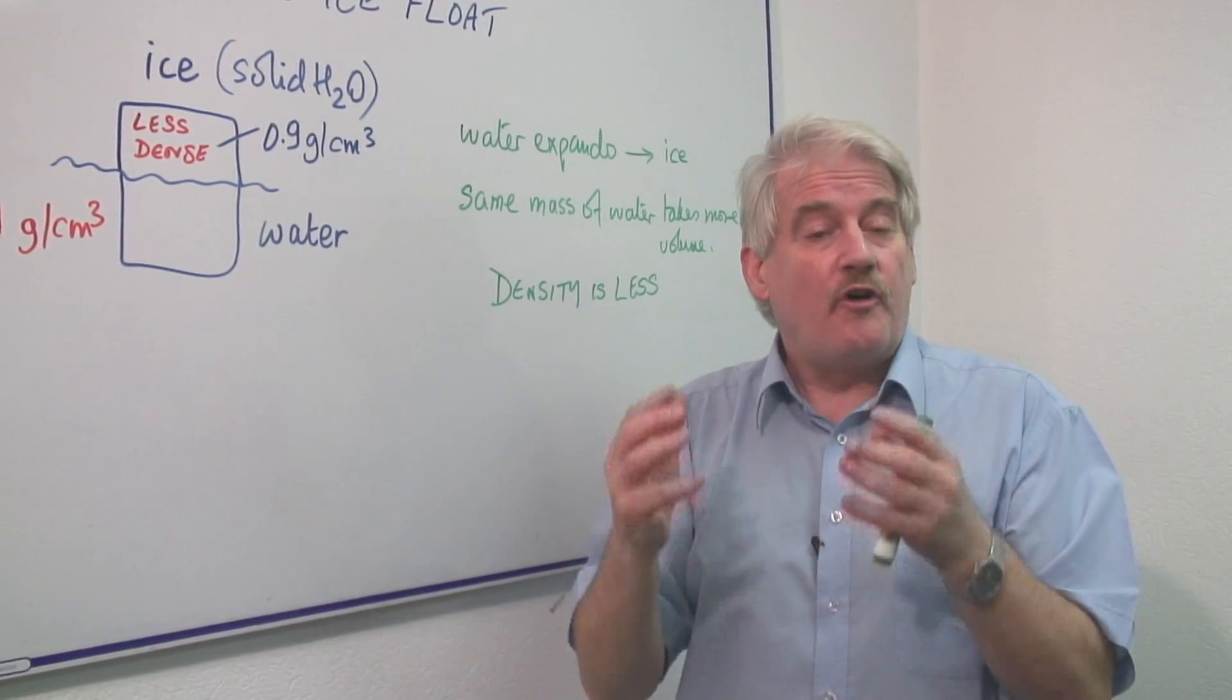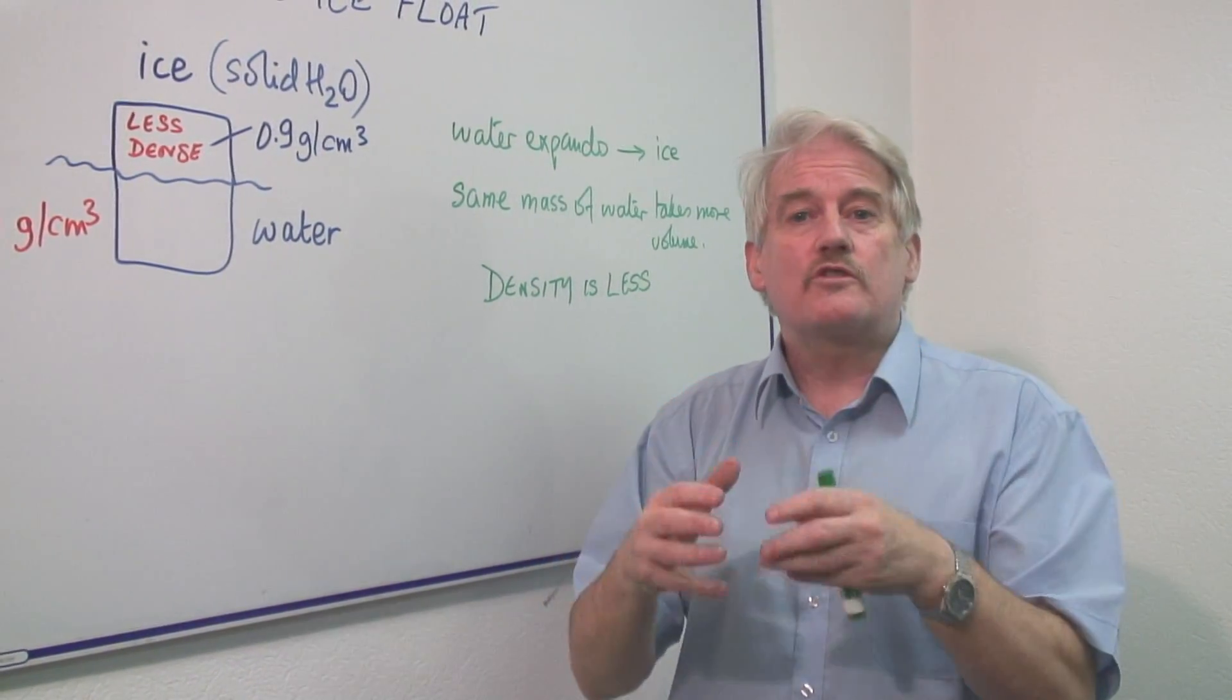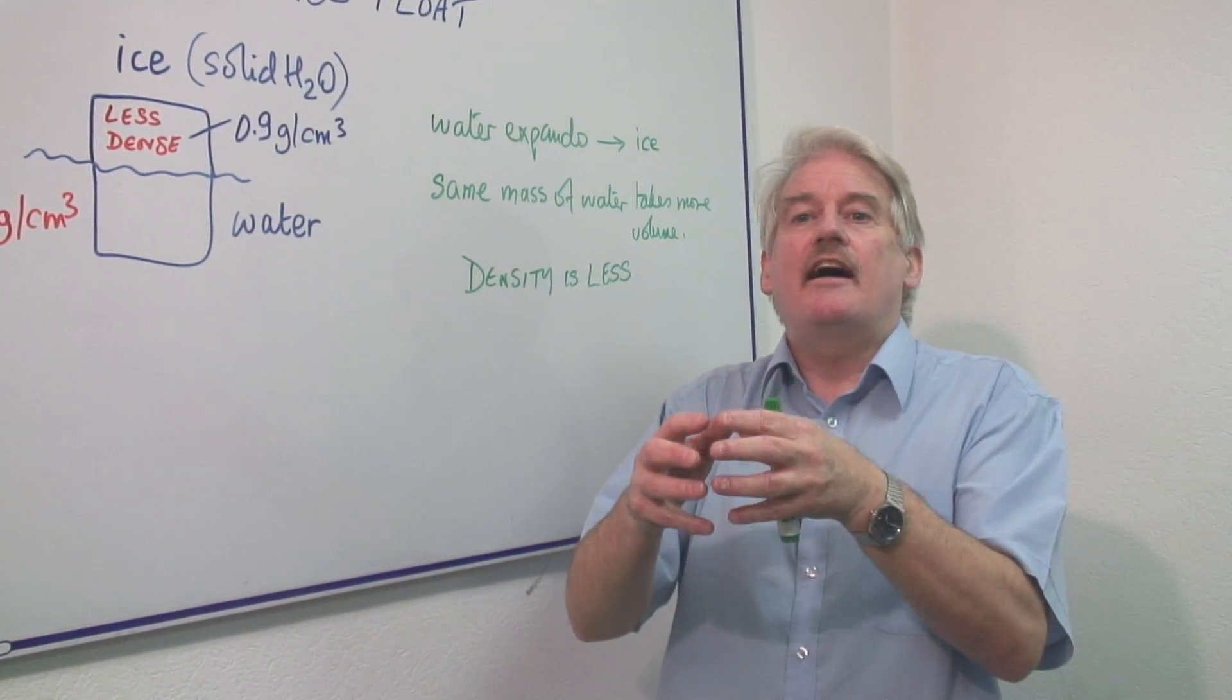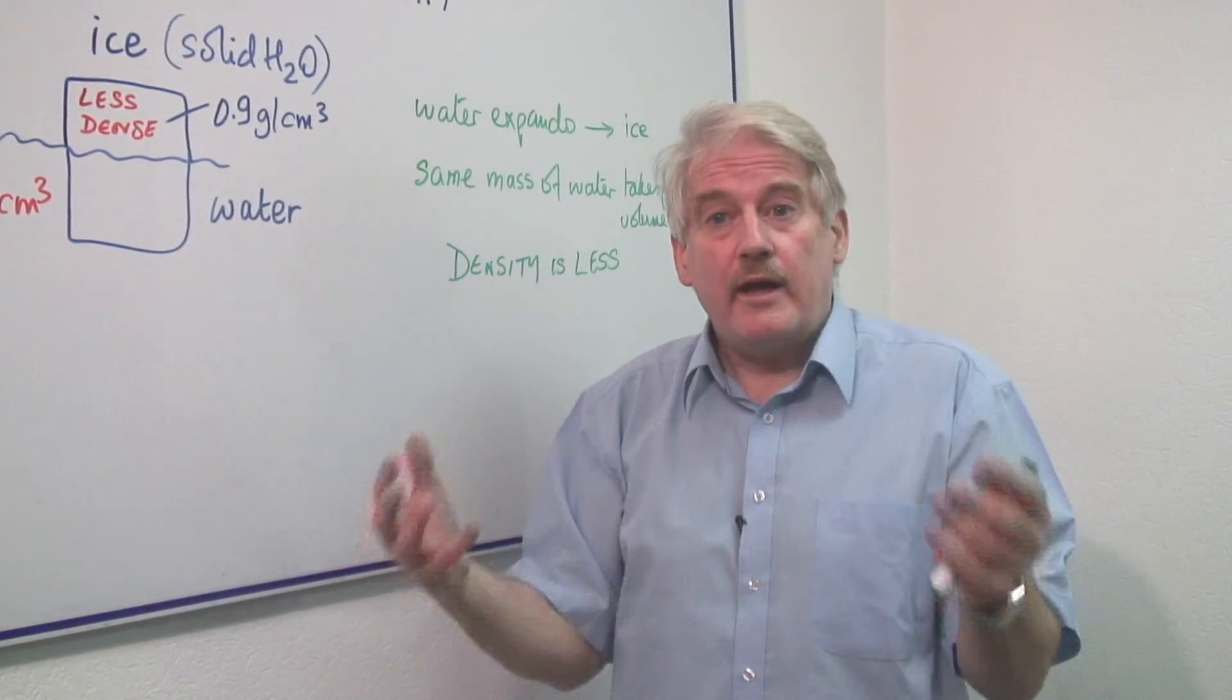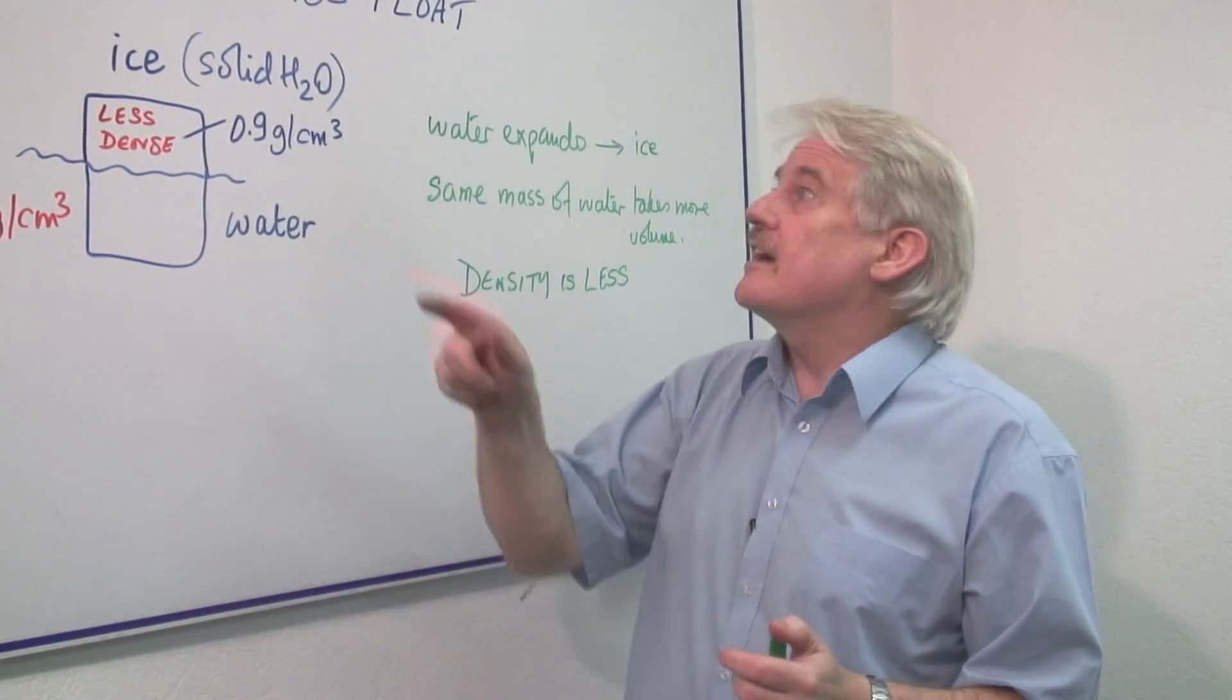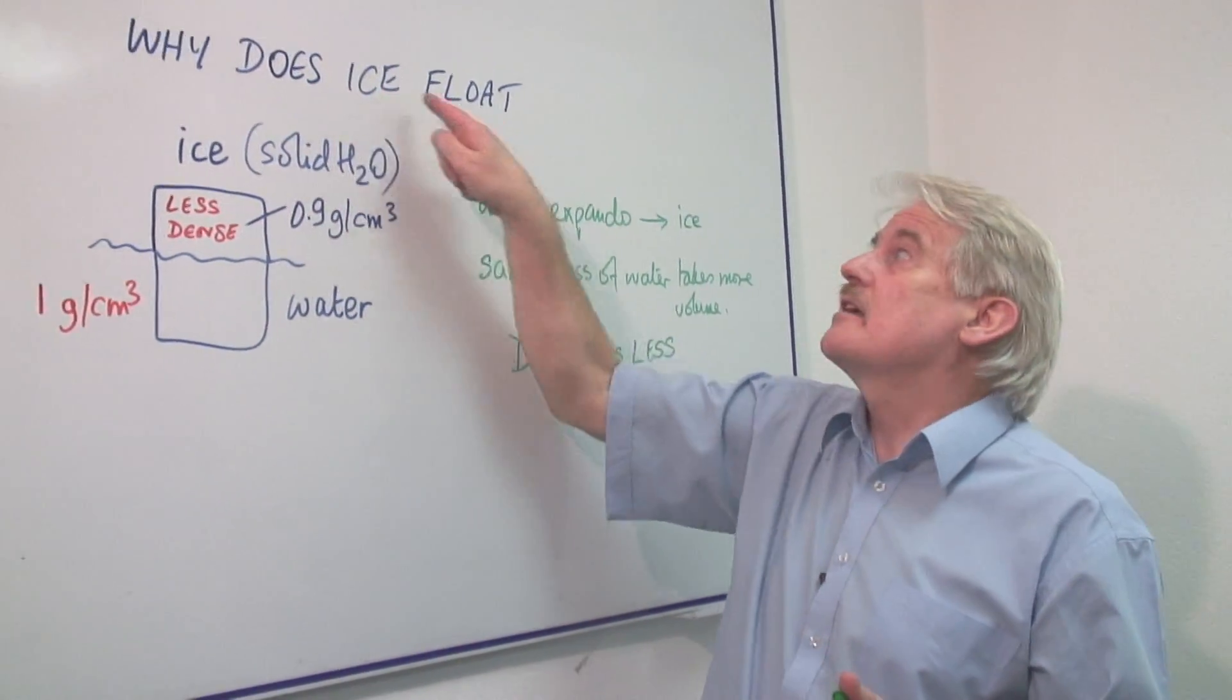Ice is formed from water. When the water freezes, the ice is formed and it is bigger in volume, lower in density. And that is why ice floats.